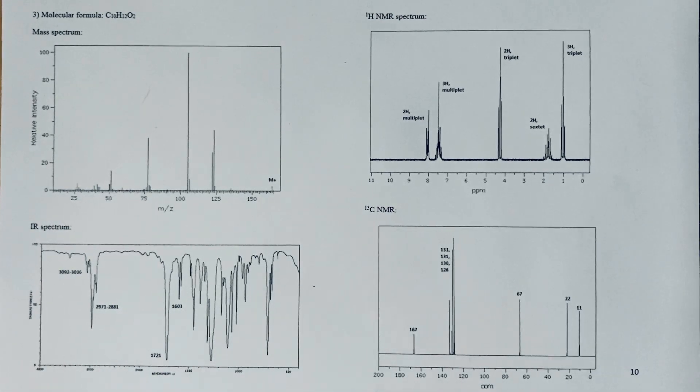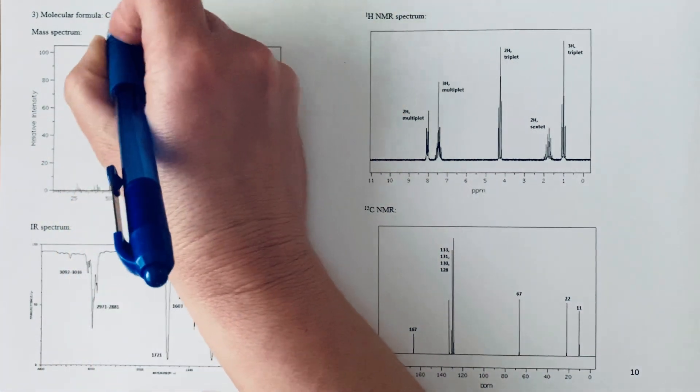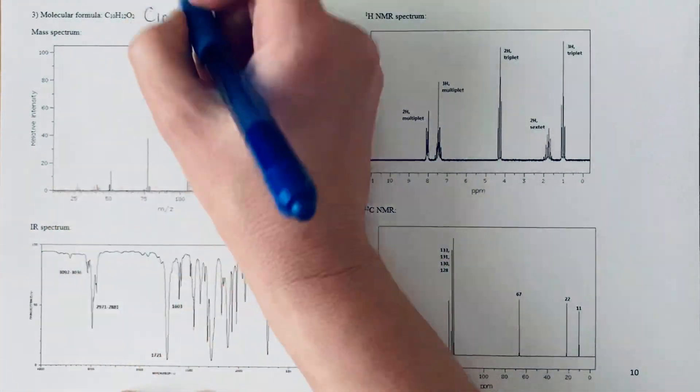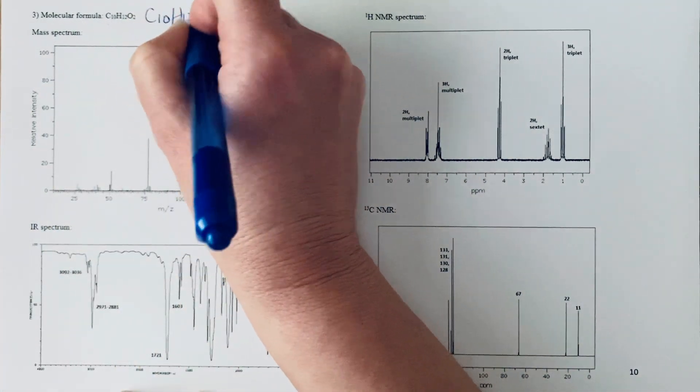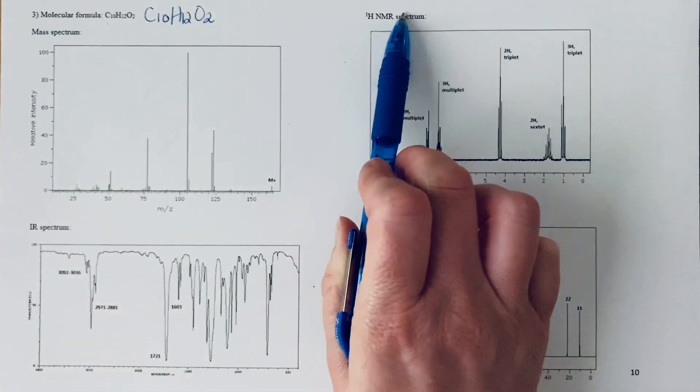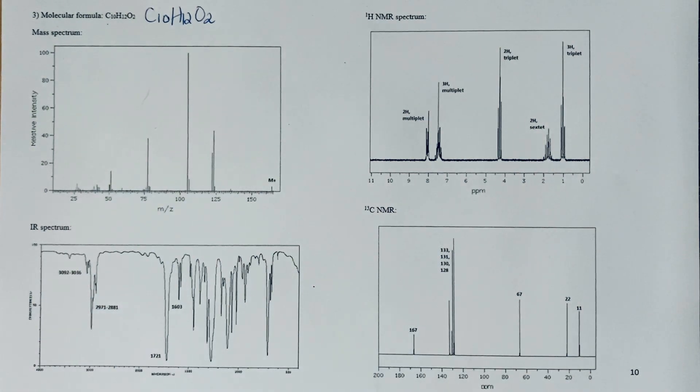In this problem we have an unknown compound with the formula C10H12O2. We have all of these spectra: a mass spectrum, a proton NMR, an IR spectrum, and a carbon-13. It's important to remember that all of these spectra correspond to the same molecule.